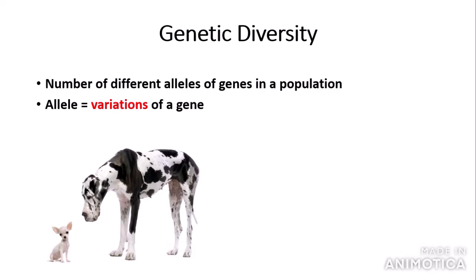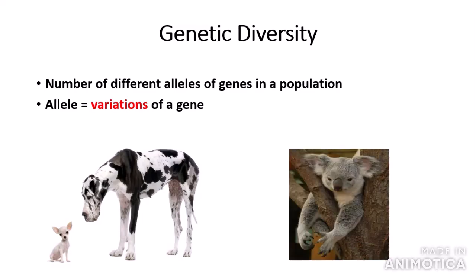To put it into context, a species that has high genetic diversity is exemplified by a species such as a domesticated dog. We have an image of a chihuahua and a Great Dane here. This exemplifies high genetic diversity because they look very different, although they are part of the same species. An example of a species with low genetic diversity is the koala.